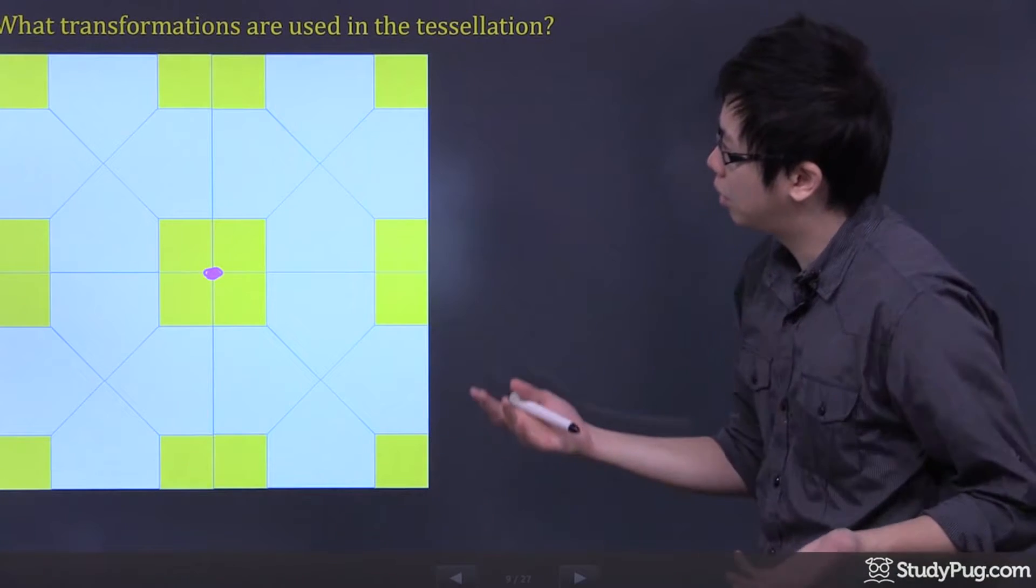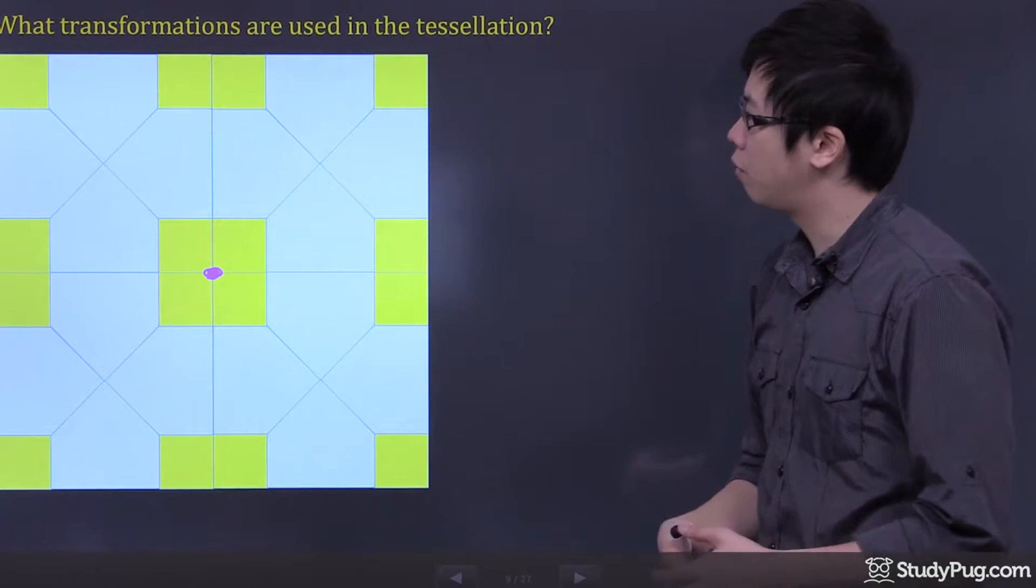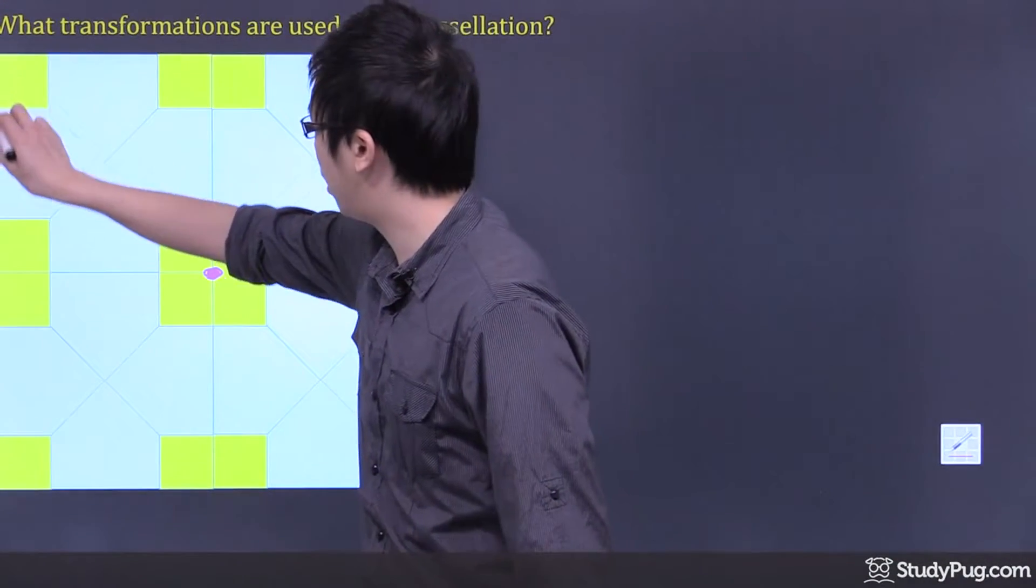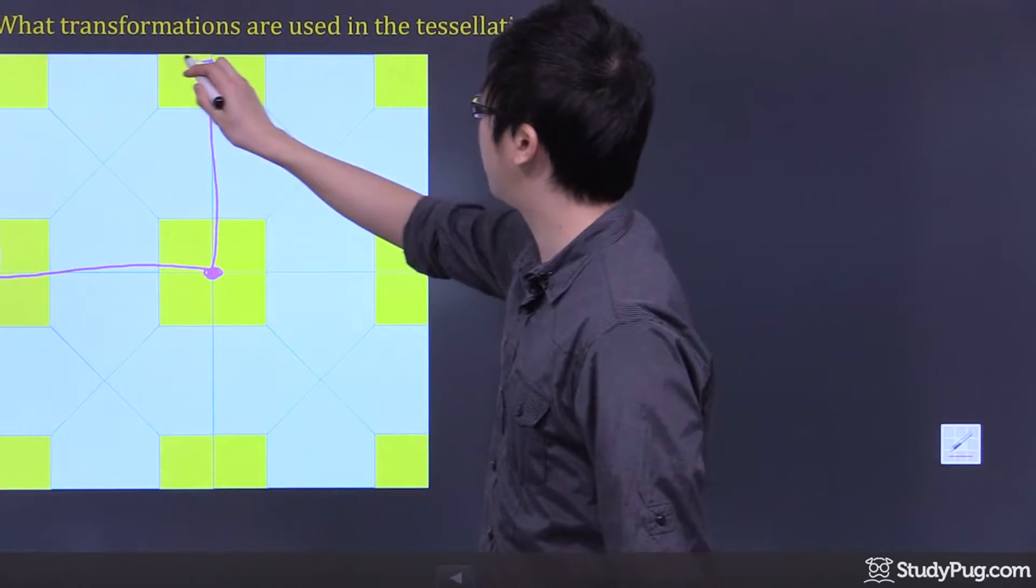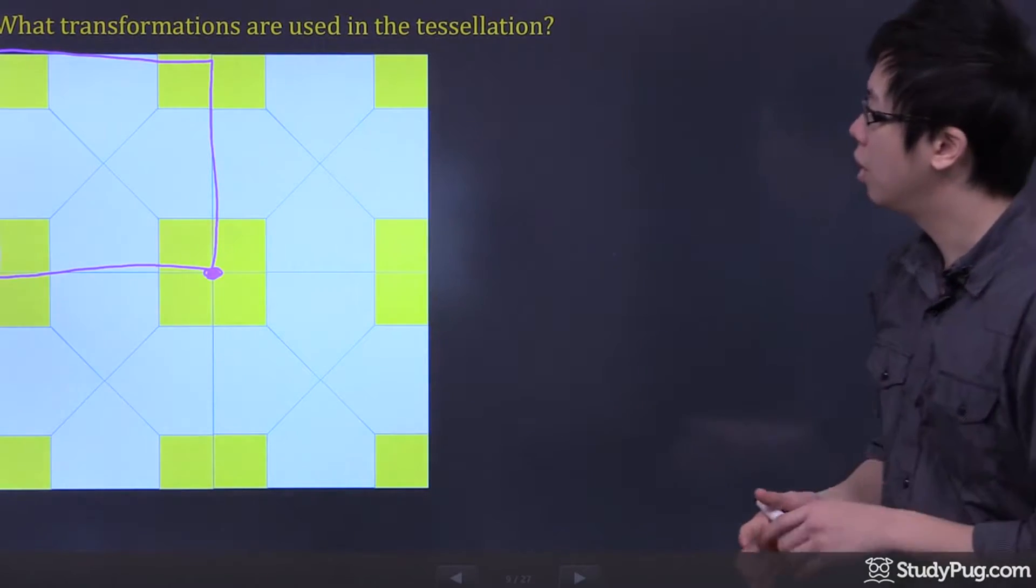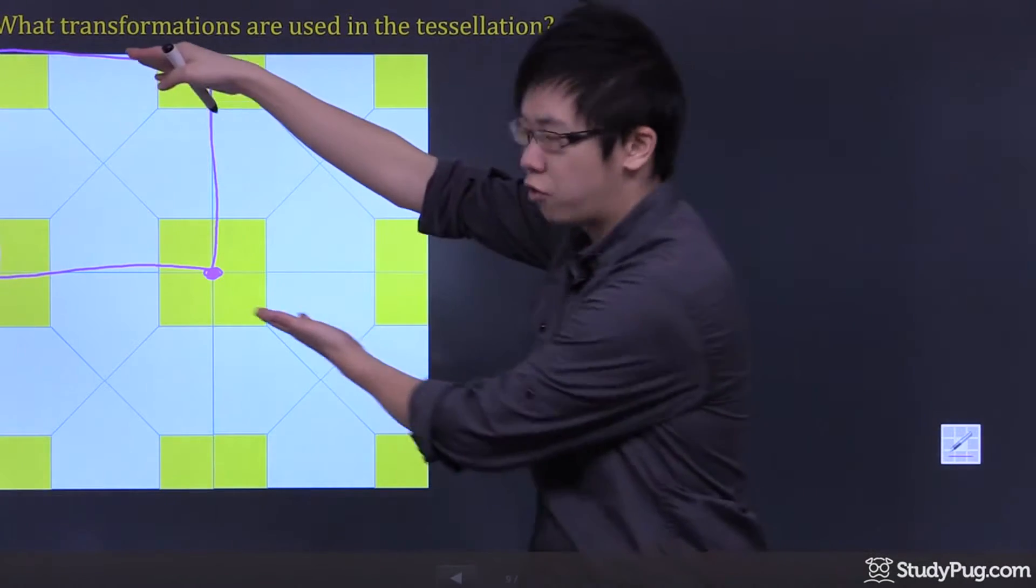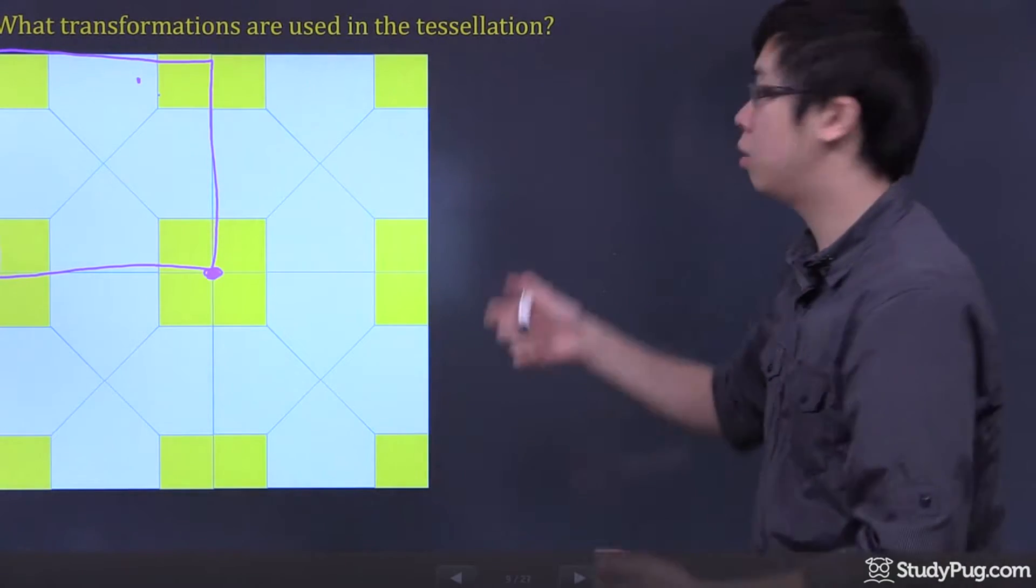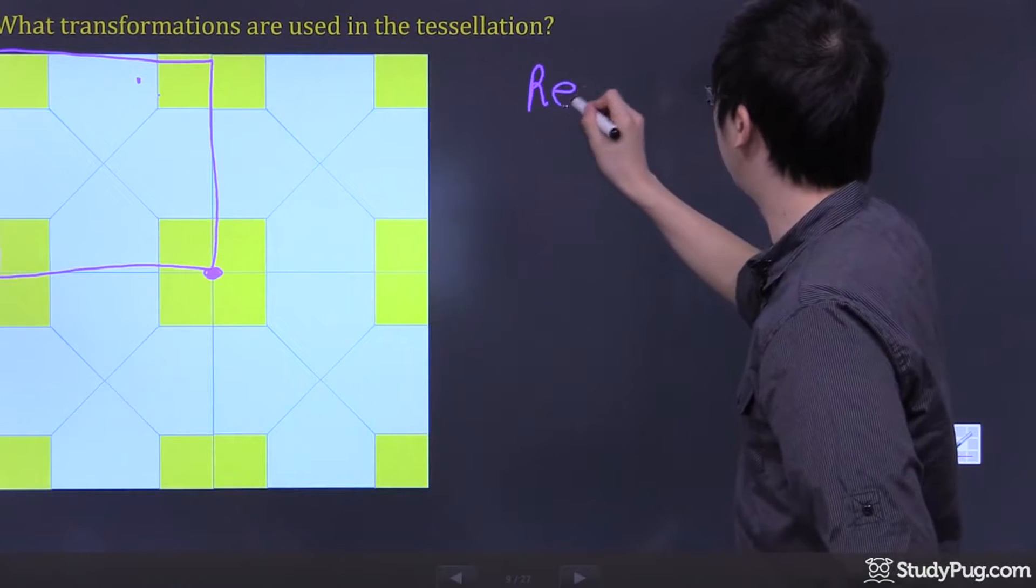So, the transformations that I use, if you picture this as one piece of the polygon here, or the figure, we can actually say that this figure right here is being reflected. There's a reflection.